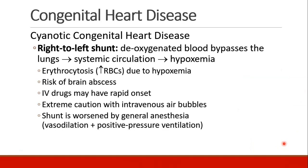So those are two acyanotic heart diseases. Patients can also have cyanotic heart diseases, where the primary problem is a right to left shunt. We have deoxygenated blood that's bypassing the lungs and going straight to the systemic circulation, and these patients are chronically hypoxic. The hypoxia leads to erythrocytosis, which means increased levels of red blood cells, as the body tries to make up for the lack of oxygen.